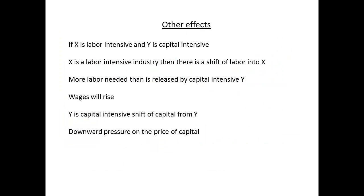X was the labor-intensive good and Y was the capital-intensive good. The increased demand for X caused a shift of labor to X. More labor was needed than was released by Y. This lets wages rise to recruit the extra labor. There is a shift of capital from Y and thus a downward pressure on the price of capital.